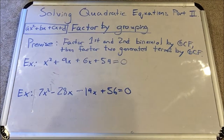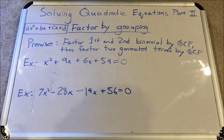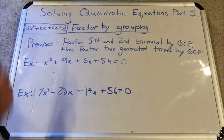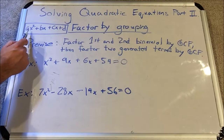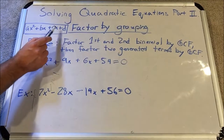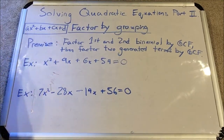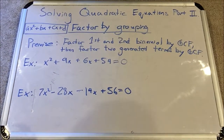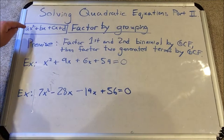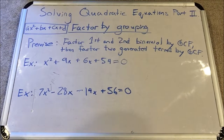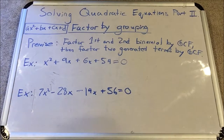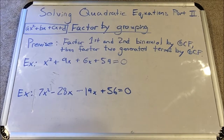Let's start with factor by grouping. We use factor by grouping when we have four terms in our polynomial — not a trinomial, but four terms. For a quadratic equation it looks like ax² + bx + cx + d, so we see two terms in the middle with x to the first power. For example, number one: x² + 9x + 6x + 54.